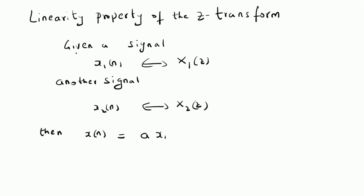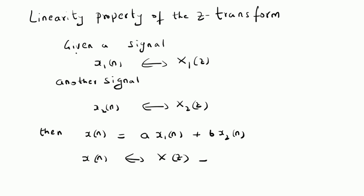It is a times x1 of n plus b times x2 of n. So the Z-transform of this combined signal, which is a linear combination of the original two signals, is that x of n will have a Z-transform x of z, where x of z will be equal to a times x1 of z plus b times x2 of z. That is, the Z-transform is also a linear combination of the corresponding individual Z-transforms. So this is the linearity property of the Z-transform.